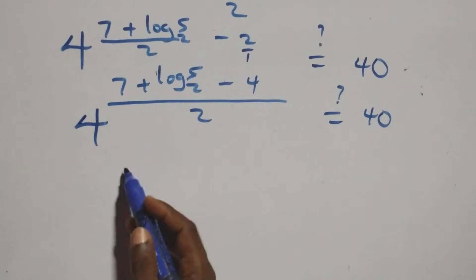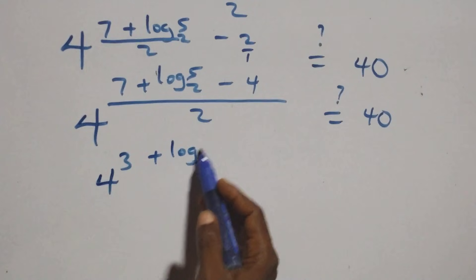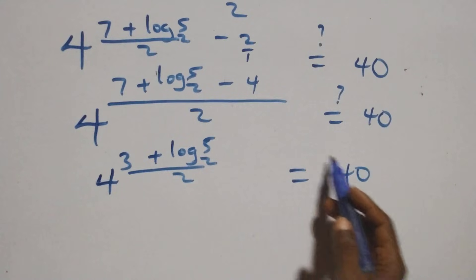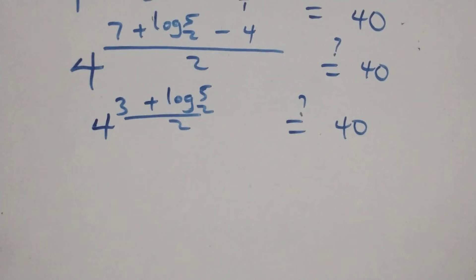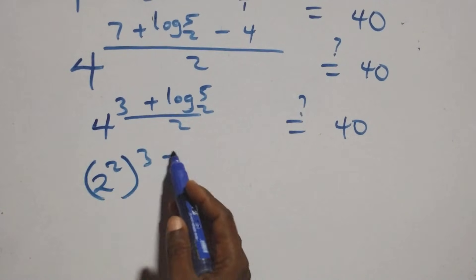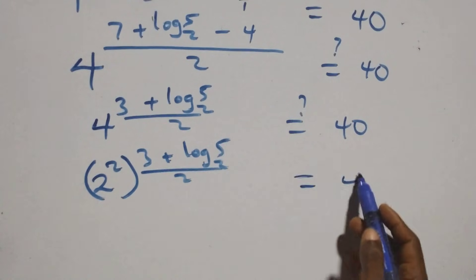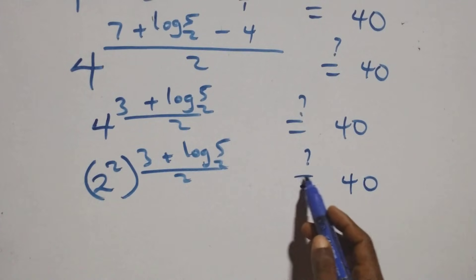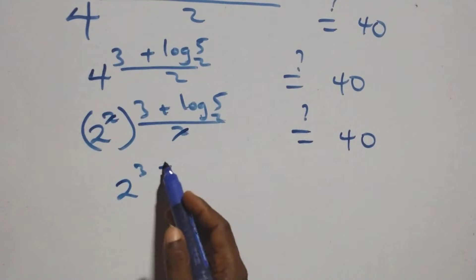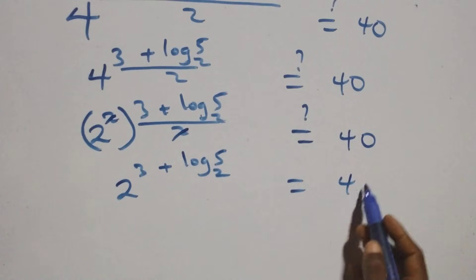Rewriting with the minus 4 as minus 3, we get 4 raised to power (3 + log₂5) over 2, equals 40. We can also write 4 as 2 squared with the 1/2 power, so 2 raised to power (3 + log₂5) times 1/2. The powers multiply: 2 raised to power (3 + log₂5) equals 40.